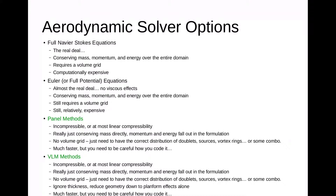There are a whole bunch of different aerodynamic solver options out there. Starting at the top, Navier-Stokes is basically the real deal — you're considering mass, momentum, and energy over the entire domain. It typically requires a volume grid and is generally computationally expensive. Moving down to Euler or the full potential equations, you're basically ignoring the viscous effects. Solving Euler still conserves mass, momentum, and energy; solving for potential is really just conservation of mass. Both still require some kind of volume grid and are relatively expensive, although Euler solvers are very competitive nowadays.